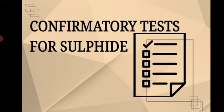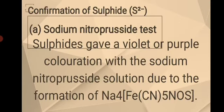For the third confirmatory test, which is for sulfide ion, let's have a short introduction. Sulfides are inorganic compounds of sulfur containing the sulfide ion. Sulfide ions form a variety of compounds; one famous example is cadmium sulfide or cadmium yellow. The black tarnish on solid silver is also due to the formation of silver sulfide. For the first test for the confirmation of sulfide, which is the sodium nitroprusside test: based on the theory from olabs.com, sulfides give a violet or purple coloration with sodium nitroprusside solution due to the formation of Na₄[Fe(CN)₅NOS], or sodium pentacyanonitrosyl ferrate(II).